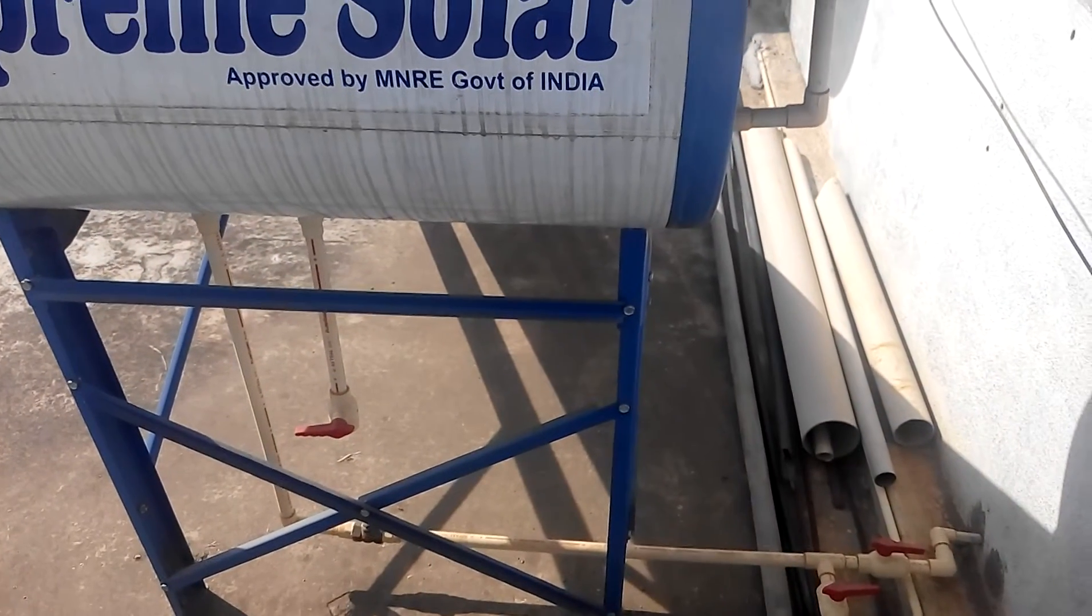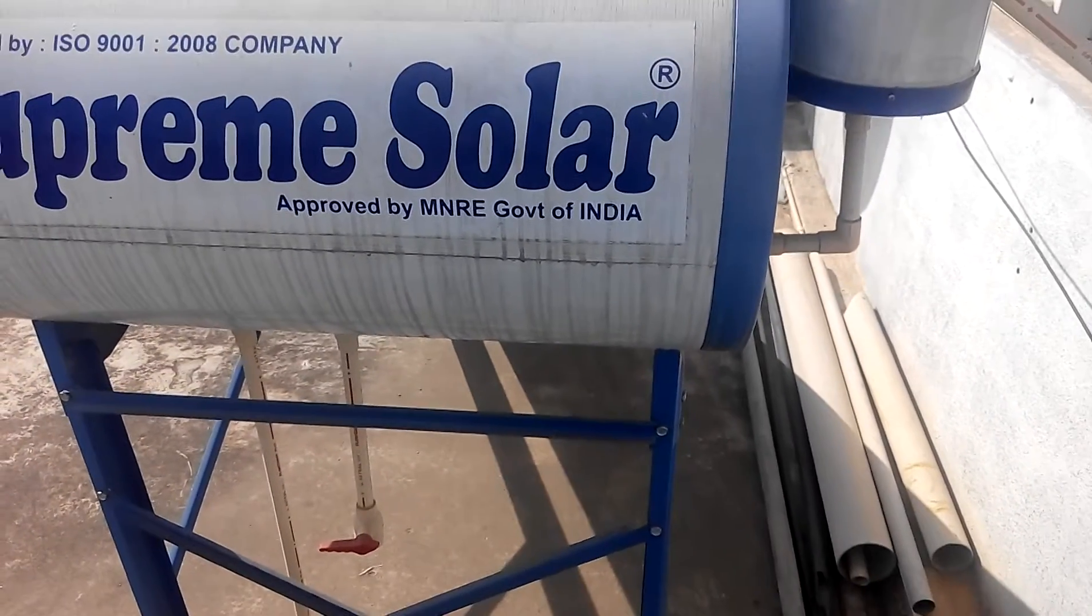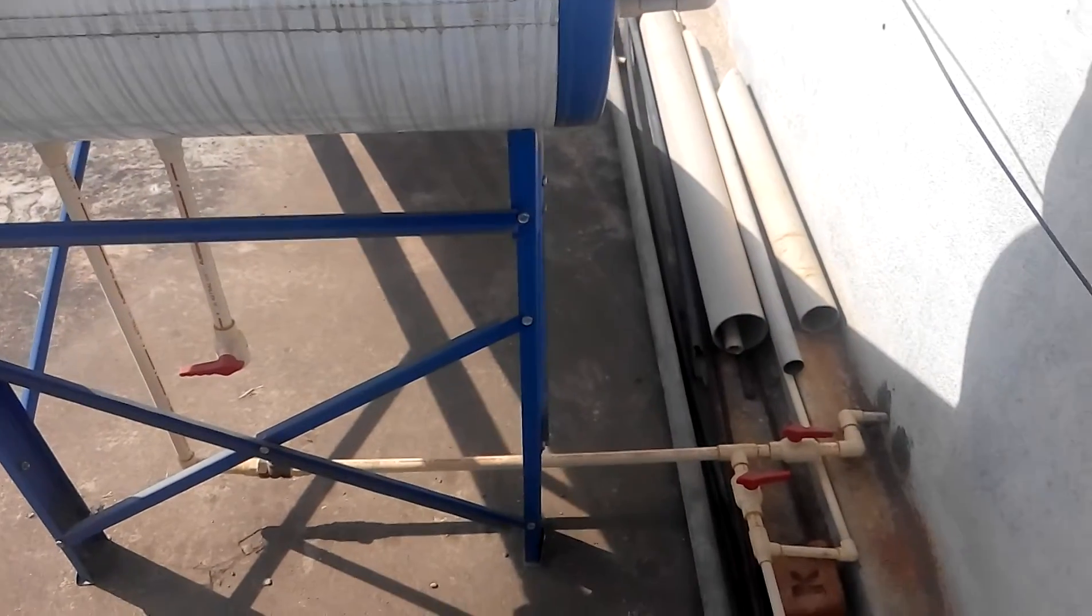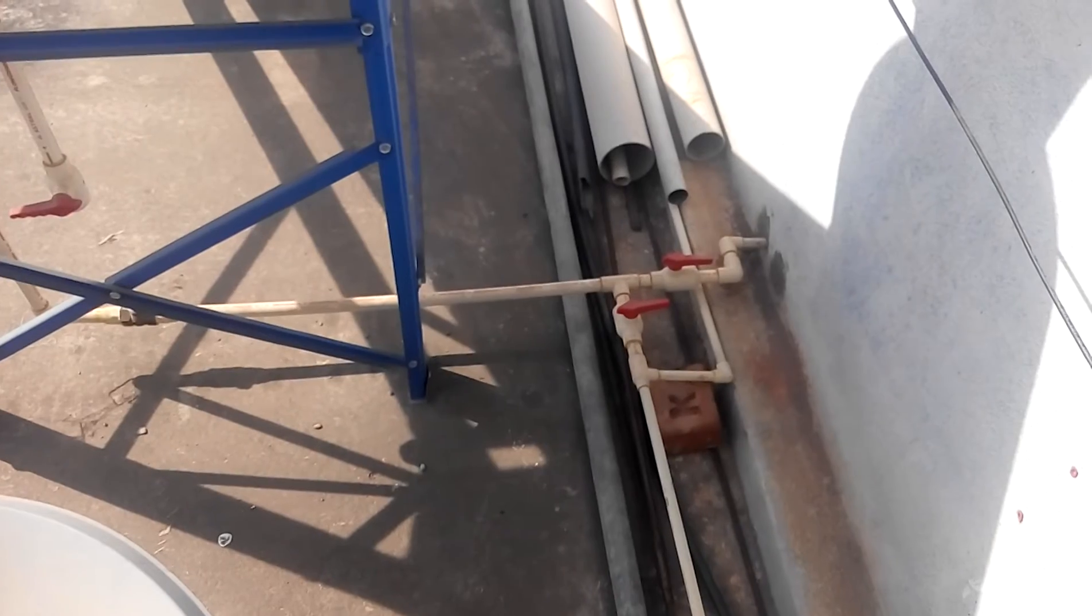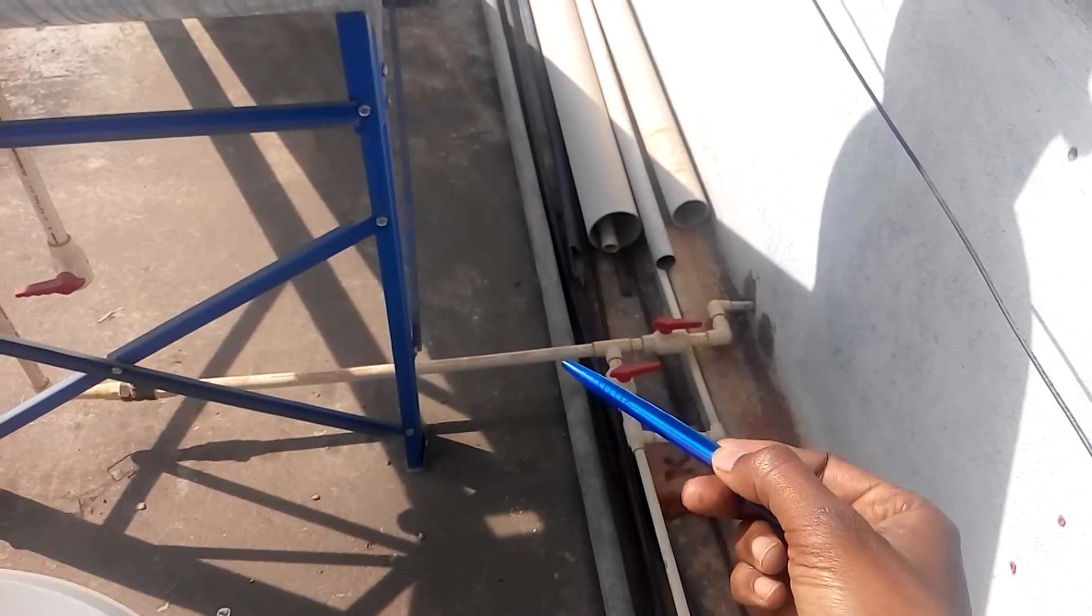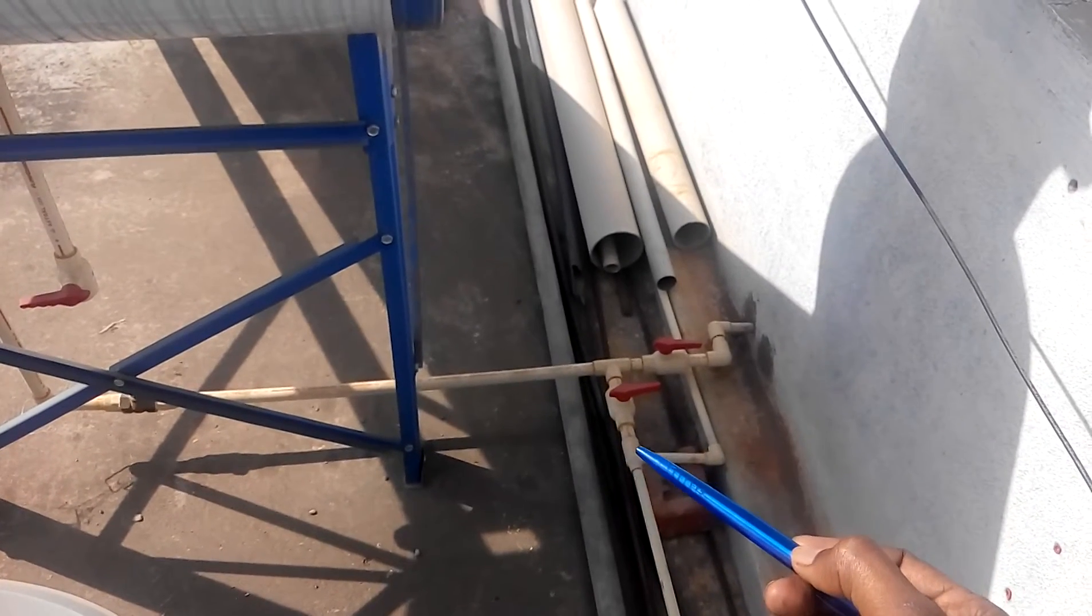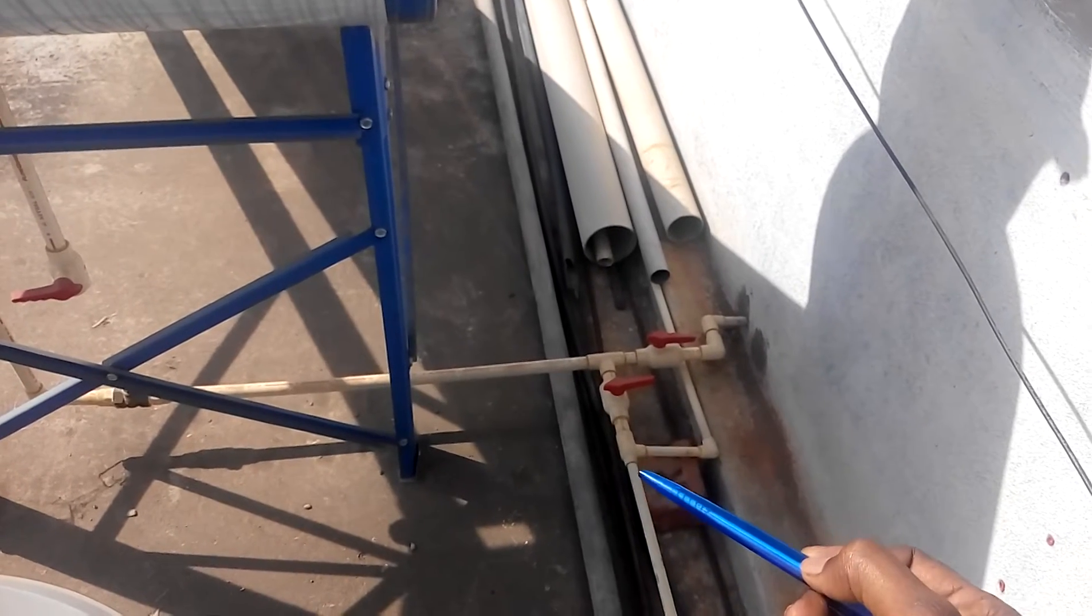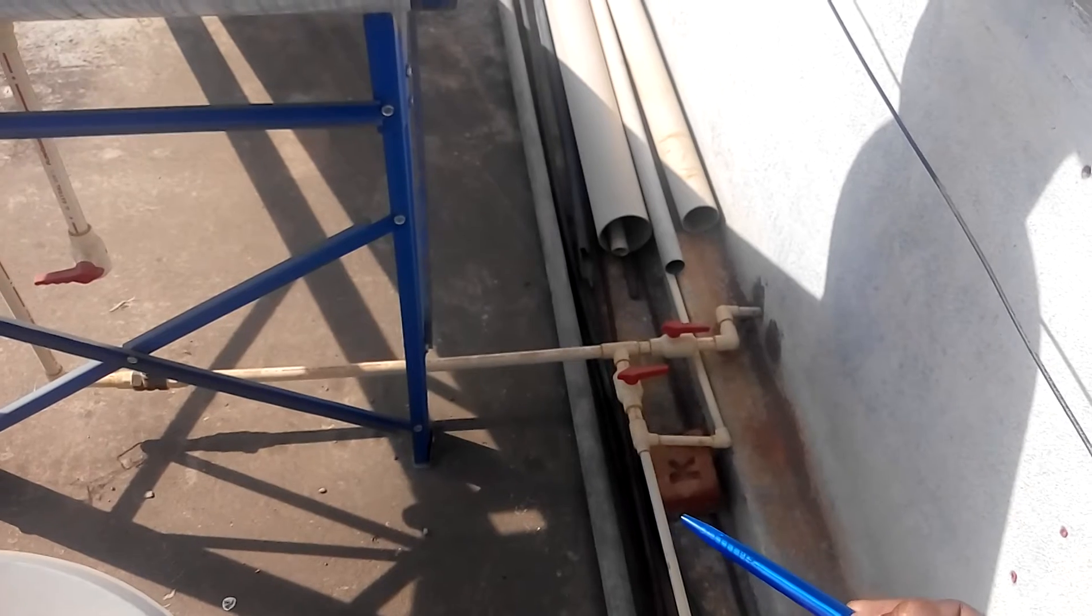Usually people use CPVC pipe for the outlet. In this installation, what we have used is a half-inch pipe. What you're seeing here is a half-inch pipe with a reducer, and the outlet pipe is half-inch, which we have tried. The reason why we tried this...